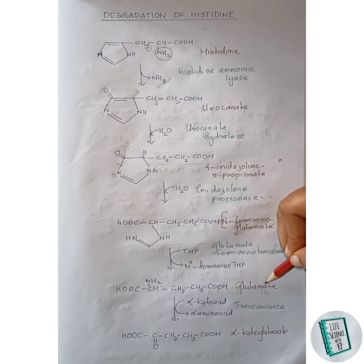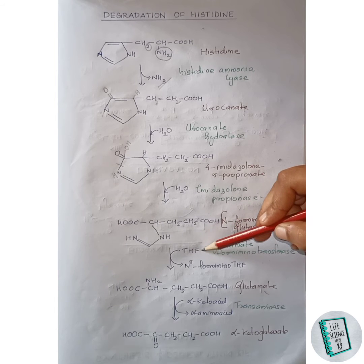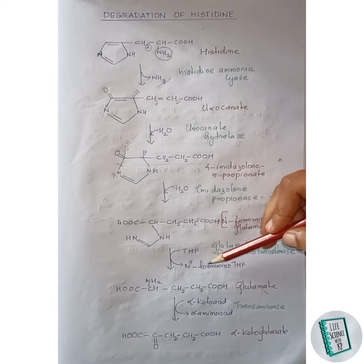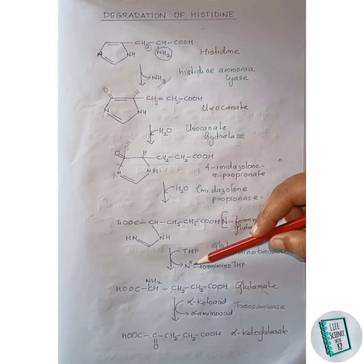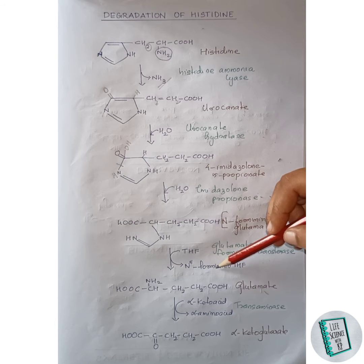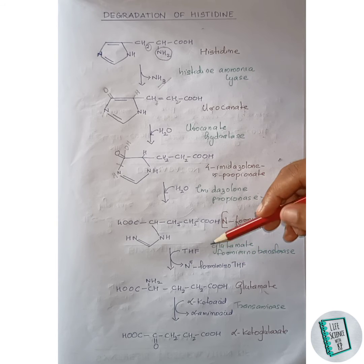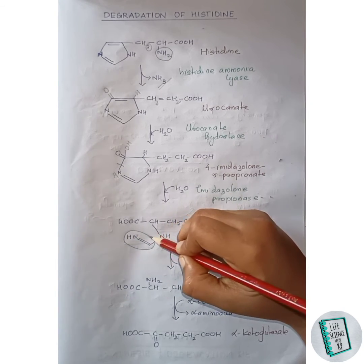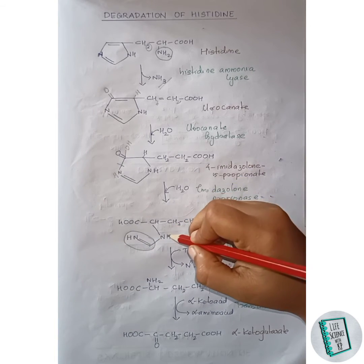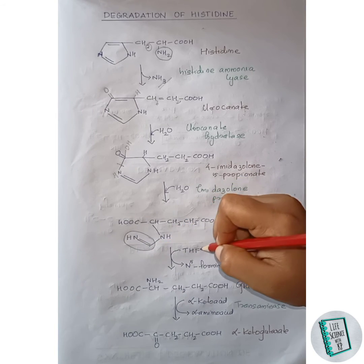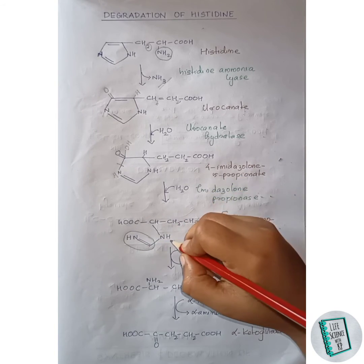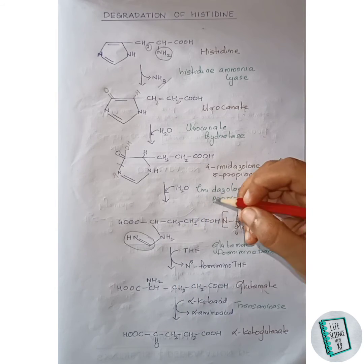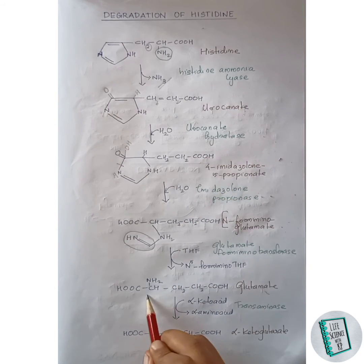N-formiminoglutamate, in the presence of glutamate formiminotransferase, forms glutamate. Tetrahydrofolate (THF) comes in and accepts the formimino group, leaving as N5-formimino-THF. The formimino group leaves with tetrahydrofolate, and the hydrogen donated by THF joins with the nitrogen forming NH2, yielding glutamate.